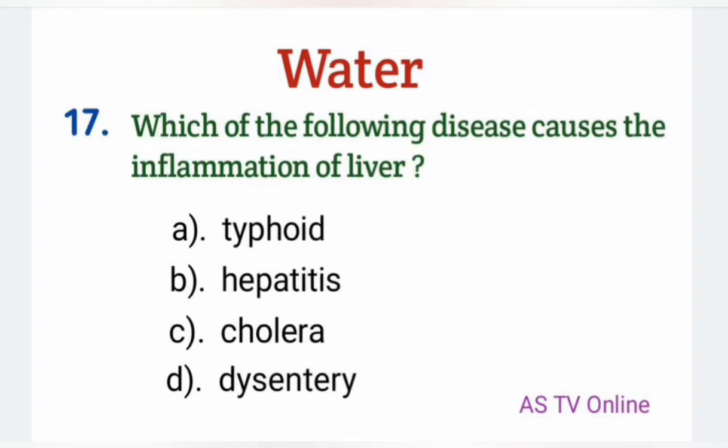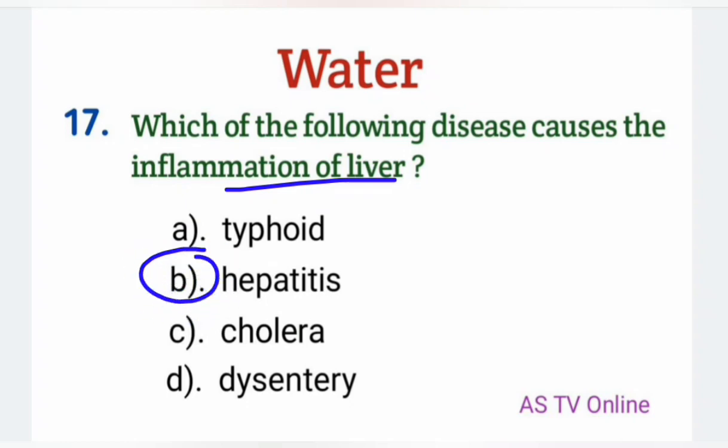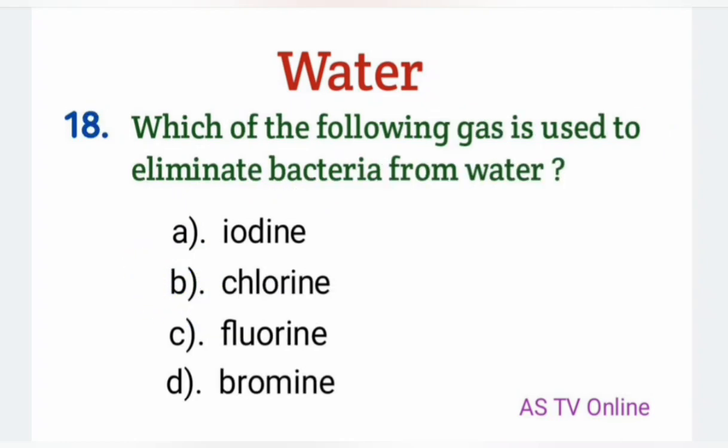No. 17: Which of the following disease causes the inflammation of liver? Typhoid, hepatitis, cholera, dysentery — Inflammation of liver hepatitis disease کی وجہ سے ہوتی ہے.